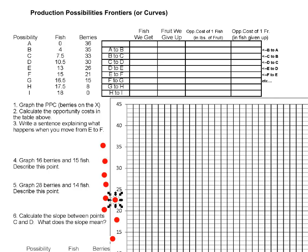A production possibilities frontier — the word frontier means boundary. What we're going to do is draw a boundary between things that we can do — things that are possible with our resources — and things that we cannot do because we don't have the level of resources required.